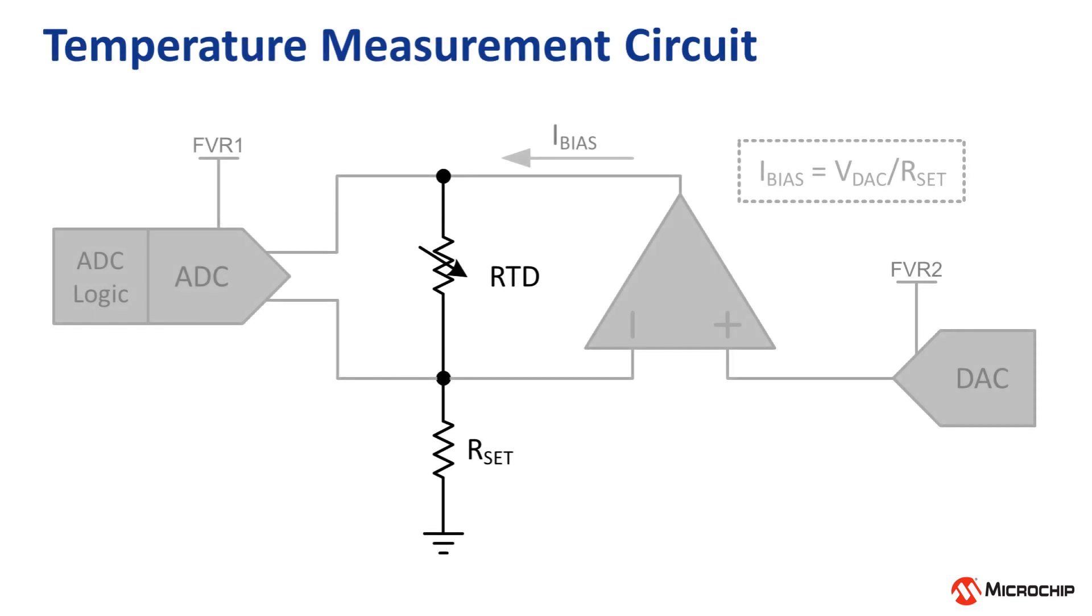To understand how the APM can be used in an application, let's consider a hypothetical example. Let's say I'm building a low power temperature monitor and I want to measure the temperature once per minute and log whenever the temperature is above or below a certain value.